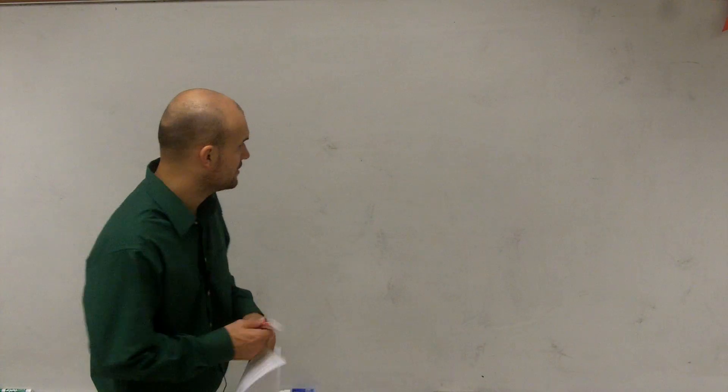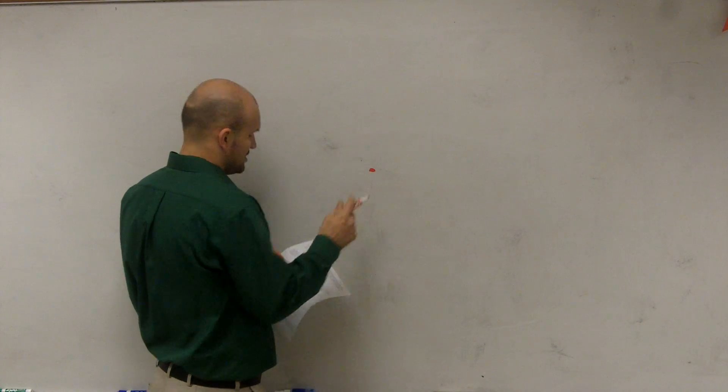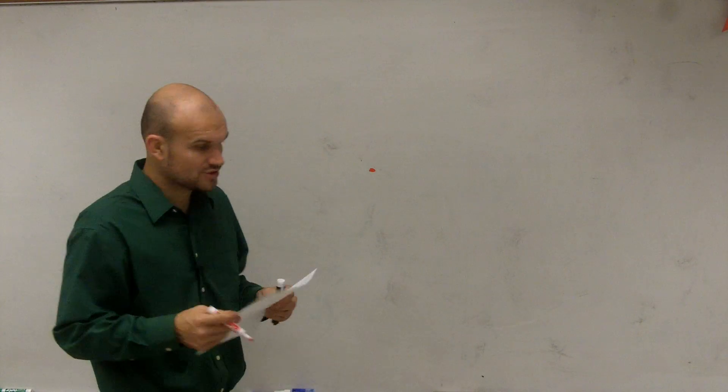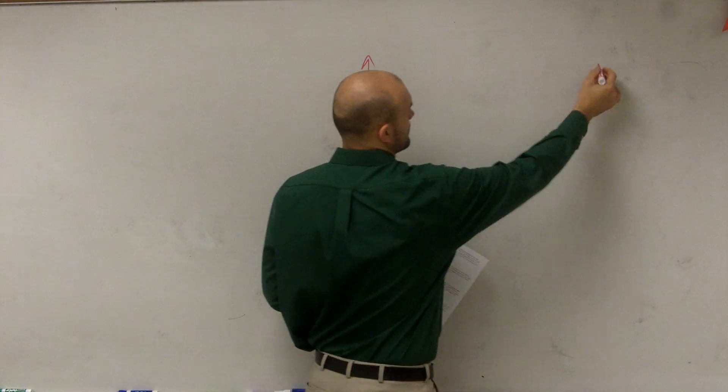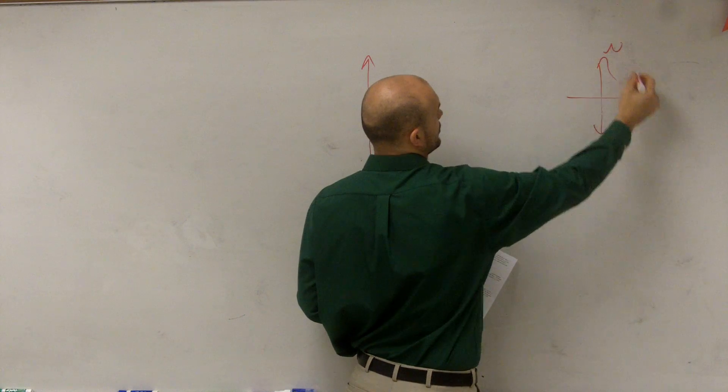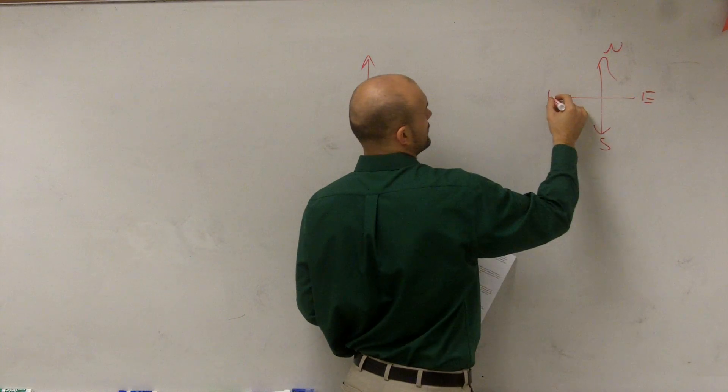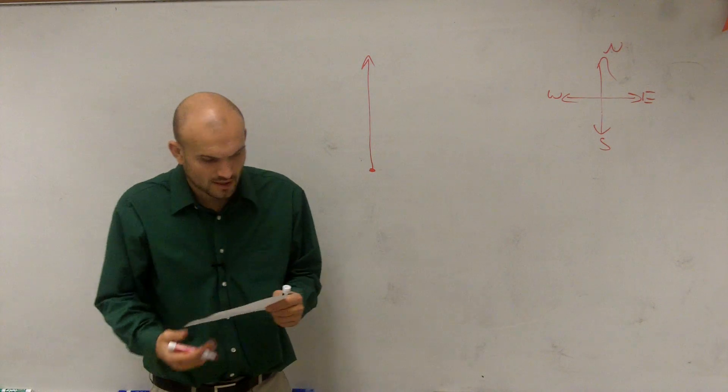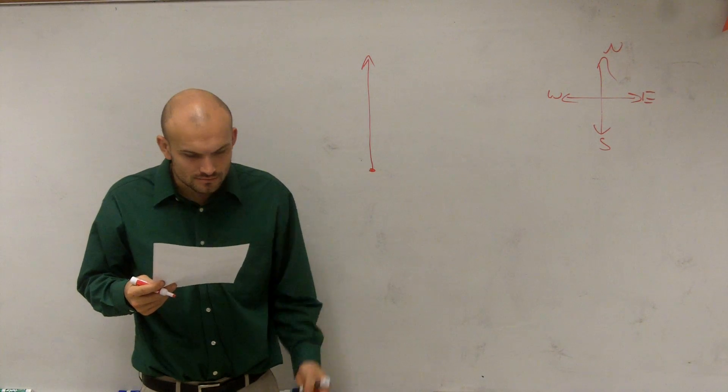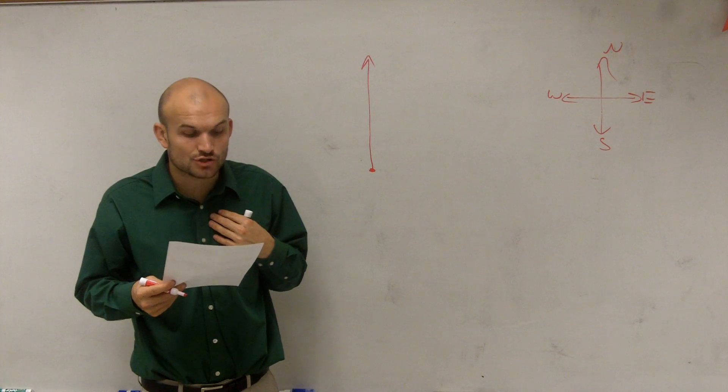All right, so for number two, it says a ship leaves port and travels 30 miles due north. So what we're going to have is, let's just make port here. So it says 30 nautical miles due north. So that's going to be straight north. Remember bearings - north, east, south, west. So it goes 30 nautical miles due north.